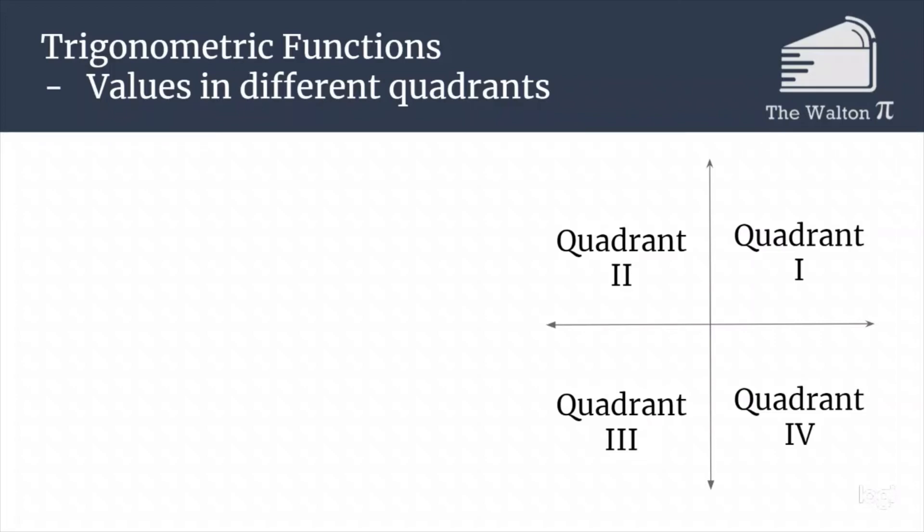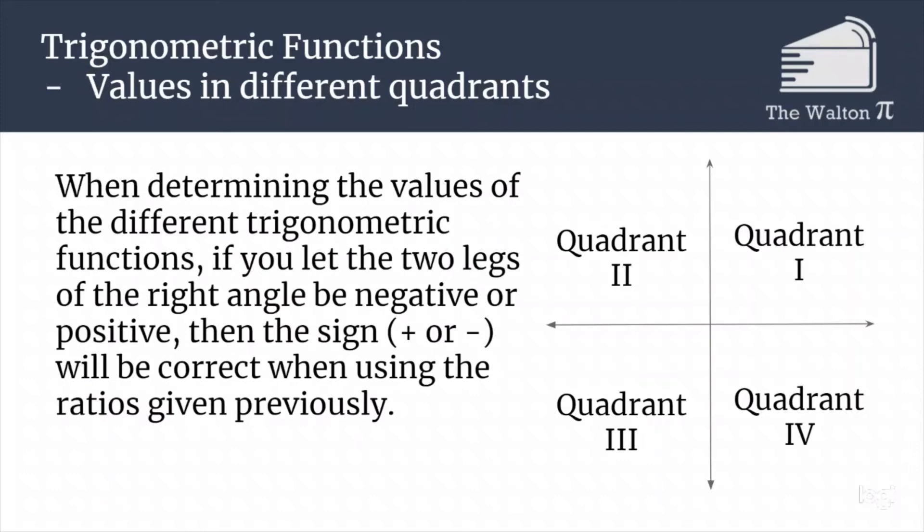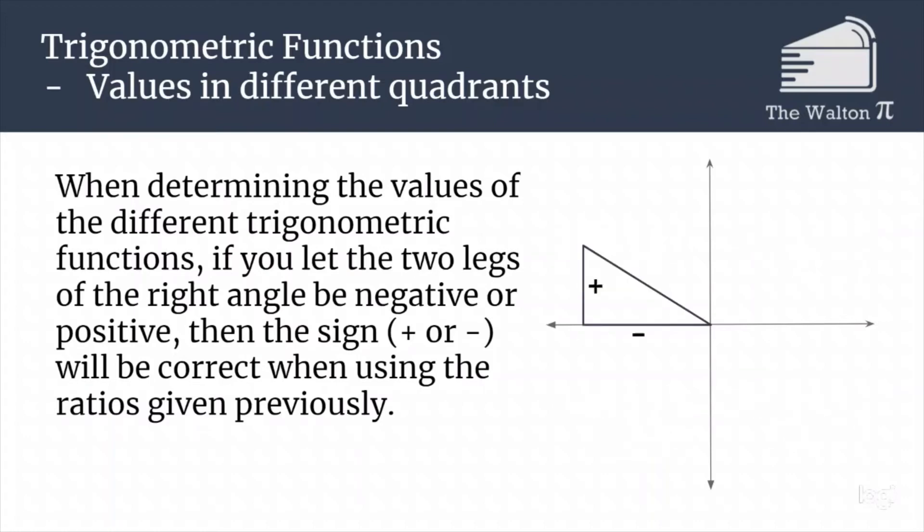If we have these values in different quadrants and you're trying to determine the values of the different trig functions, just let the two legs of the right angle either be negative or positive. Even though on a normal triangle each side is always positive, if you let the leg be negative or positive depending on what quadrant it is, you're going to get the correct ratios given previously. If this is our triangle and you have figured out the angle theta inside the triangle, that will give you the different positive or negative values that you would need.